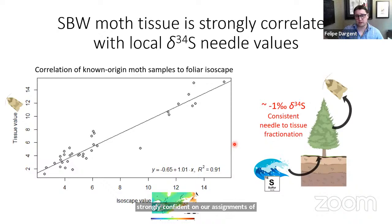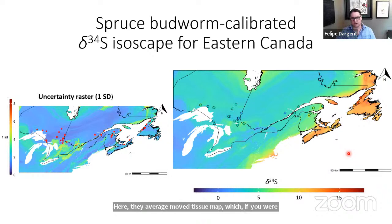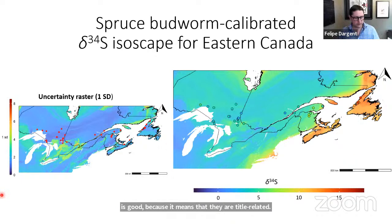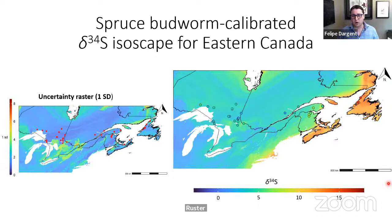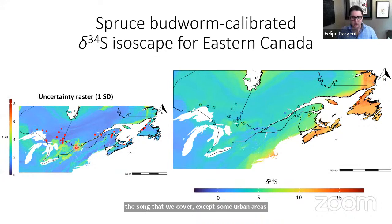This very tight correlation means we can be strongly confident in our assignments of unknown-origin tissues using this isoscape. Here I'm showing the calibrated map — the average moth tissue map — which looks very similar to the foliar isoscape, which is great news. On the left is the uncertainty raster, which tells us about certainty for those modeled values. Most of the zones we cover have about a two per mil or less uncertainty, giving us a very reliable tool.